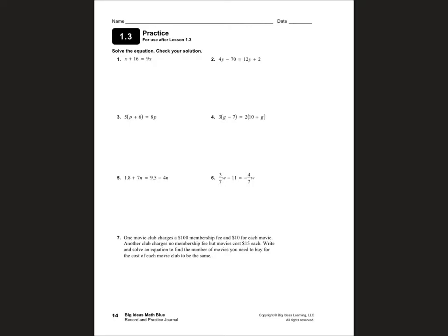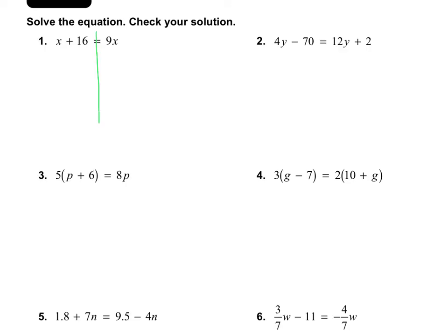Pause the video and take out your RPJ and turn to page 14 for some more examples. On number 1, I have x's on both sides of the equation, and everything is as simple as it possibly can be. So I move on to step 2 and subtract 9x from both sides, and at the same time subtract 16 on both sides. The 9x minus 9x cancel and the 16 minus 16 cancel.